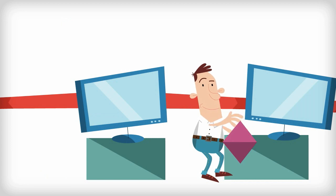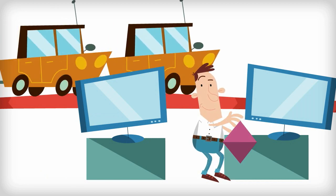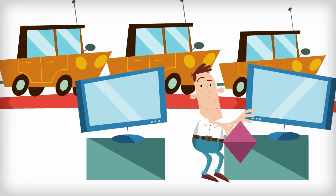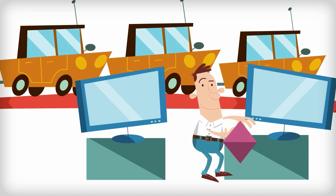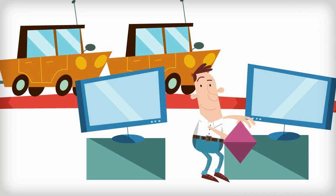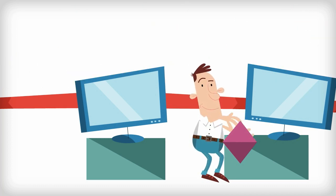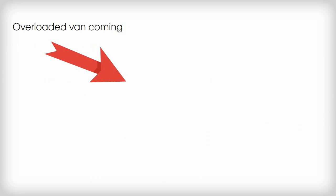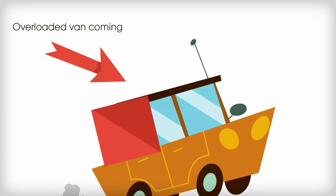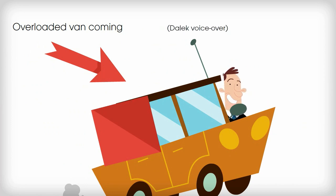Mass production techniques involving high levels of automation can improve labour productivity — for example, the use of robots in manufacturing. Once again, only businesses that have reached a certain size will be able to justify purchasing this type of expensive machinery. Better and bigger transport methods can also reduce distribution costs per unit. A larger business with bigger sales might make deliveries with a lorry instead of a van, reducing the number of trips and the amount of labour needed to deliver goods.